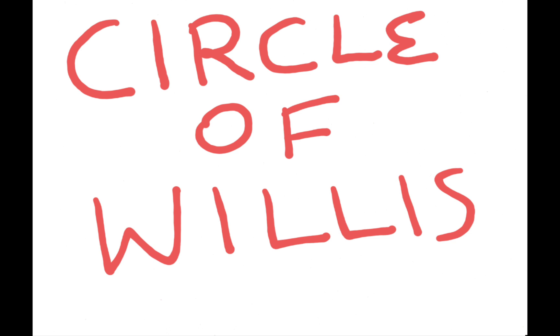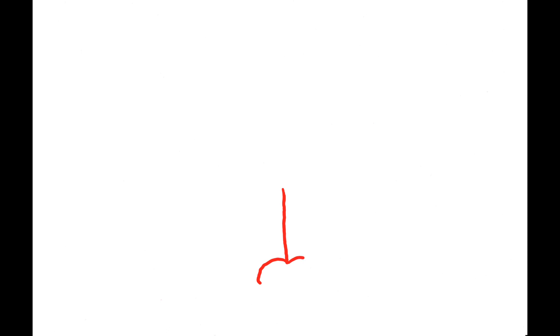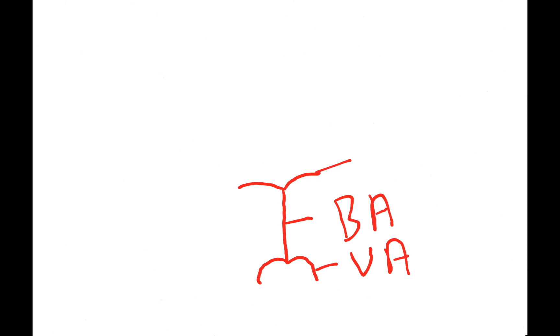The Circle of Willis — the best way to draw it is to draw a line first like this, then draw like this, then draw like this. This is the vertebral artery, this is the basilar artery, this is the posterior cerebral artery.